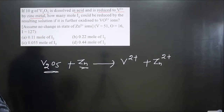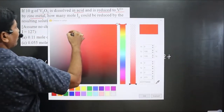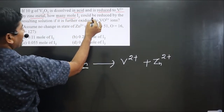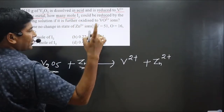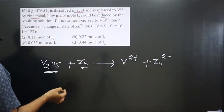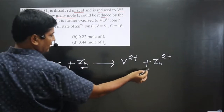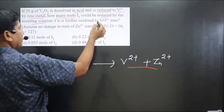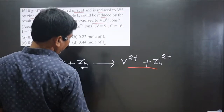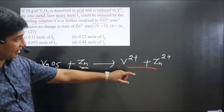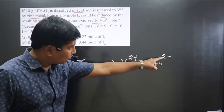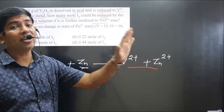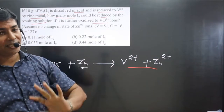The reaction is taking place in acidic medium. The question further asks how many moles of I2 could be reduced — iodine undergoing reduction reaction by the resulting solution. Keep in mind: Zn²⁺ is already present in its maximum oxidation number, so it will not undergo oxidation reaction.